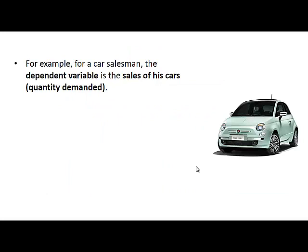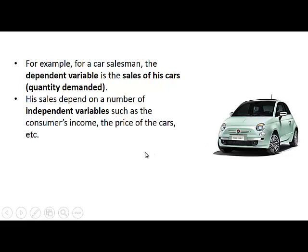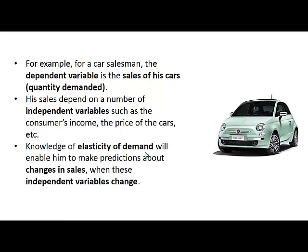For example, for a car salesman the dependent variable — in other words the variable that he would like to predict — is the sales of his cars, in other words the quantity demanded of the cars that he sells. His sales will depend on a number of independent variables such as the consumer's income and the prices of the cars.